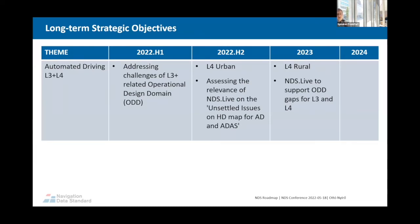Robot taxi solutions were already presented at the IAA in Munich last year, so we need to look at that in the NDS product definition group. We've already started working on some L4 urban use cases but realized we need more detail. Also, there was a presentation about unsettled issues on HD maps for AD and ADAS use cases, and we need to identify any gaps in the NDS Live specification that need to be settled. In the long term, we need to look at L4 rural use cases and the ODD gaps between L3 and L4.